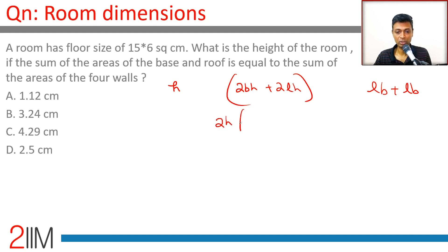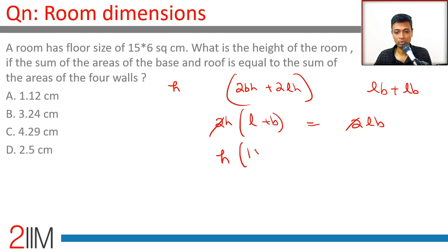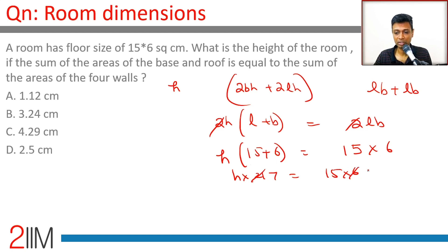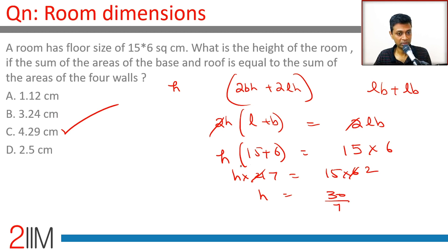Solving: 2h(l + b) = 2lb, so 2 times h into 15 plus 6 equals 2 times 15 times 6. That gives h times 21 equals 15 times 6, so h equals 30 by 7 centimeters, which is approximately 4.29 centimeters. This is a very routine question in an exam context — you should be nailing these and not focusing on tougher ones like exponents and inequalities.